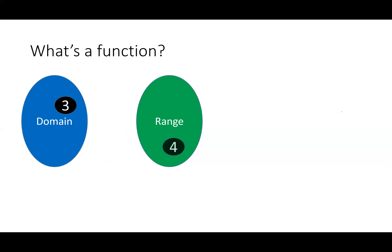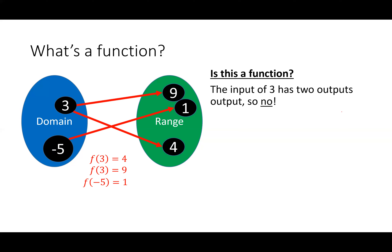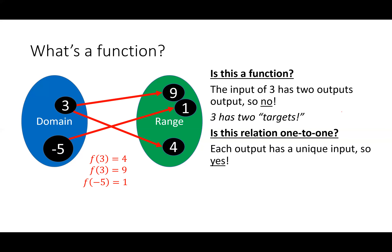Now let's change it up. Let's say f(3) = 4, f(3) = 9, and f(−5) = 1. Is this a function? The input of 3 has two outputs, so no. Three has two targets that it maps to. Is this relation one-to-one? Each output has a unique input, so yes. But this is not a function.